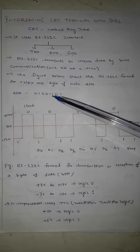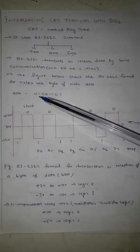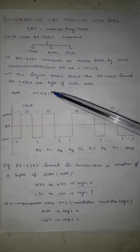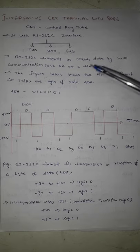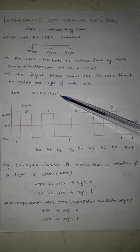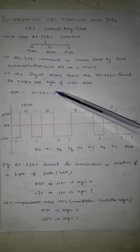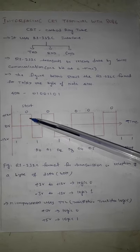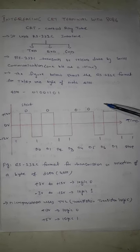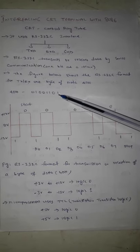Example data 4DH is written in binary: the value of 4 is 0100 and the value of D is 13 in decimal, which is 1101 in binary. So 4DH in binary is 0100 1101. Here, D0 is the least significant bit and D7 is the most significant bit. First, a start bit of 0 is sent to indicate the start of data transfer.